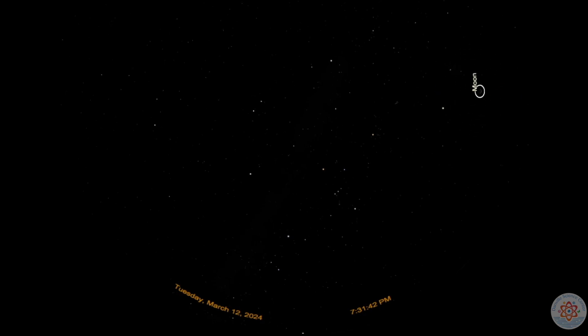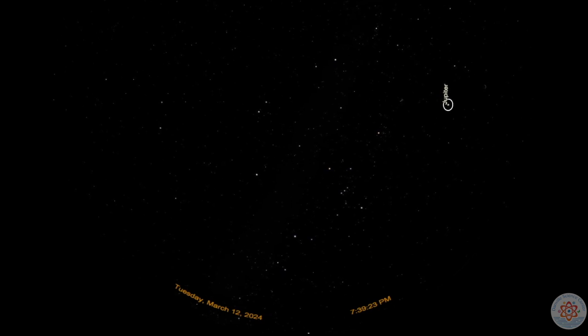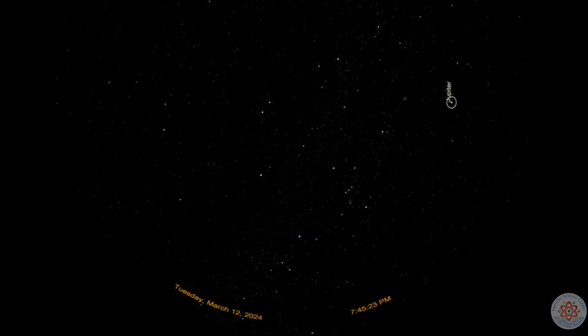Just above the moon, we can still spot gas giant Jupiter. The two will appear even closer in tomorrow night's sky when Jupiter reaches lunar conjunction. Jupiter will remain above the horizon through April, but it is slowly making its descent.